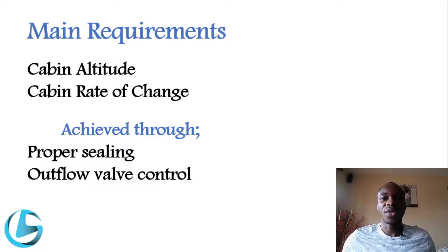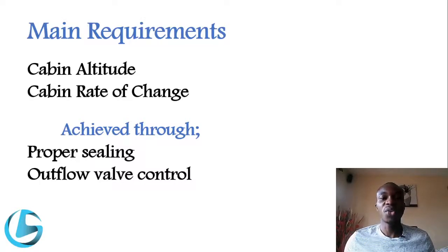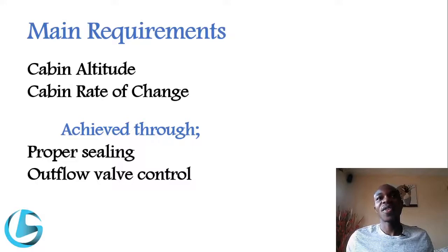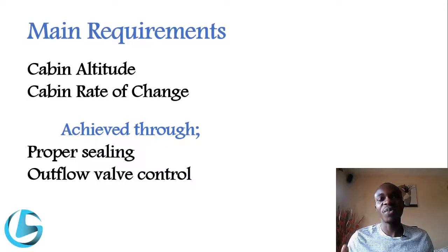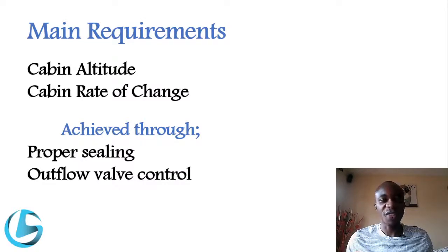Next we look at the main requirements for a pressurization system. A good pressurization system should be able to maintain cabin altitude at about 8,000 feet, which is the altitude comfortable for human survival. Beyond 8,000 feet, challenges may be experienced by cabin occupants.